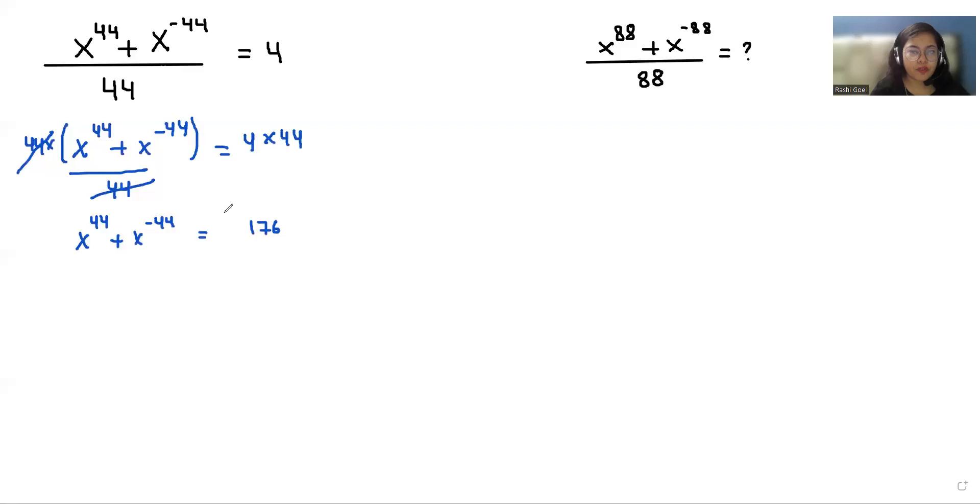Now we have to find the value of 88. So for this I am doing squaring both sides. x power 44 plus x power negative 44 whole square equals 176 whole square.